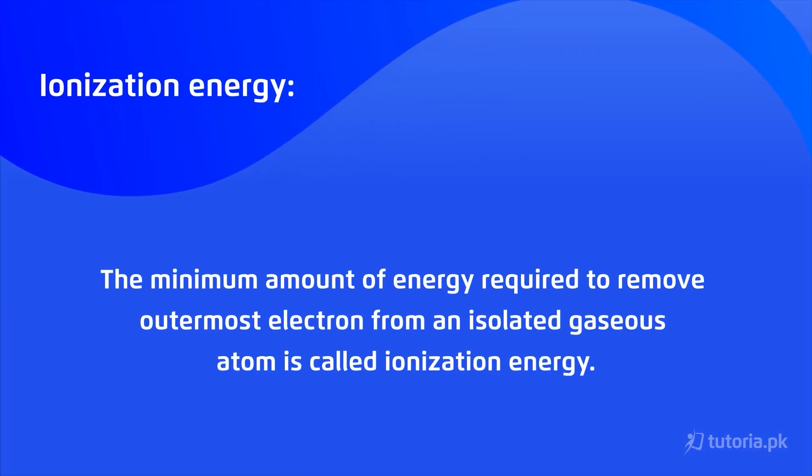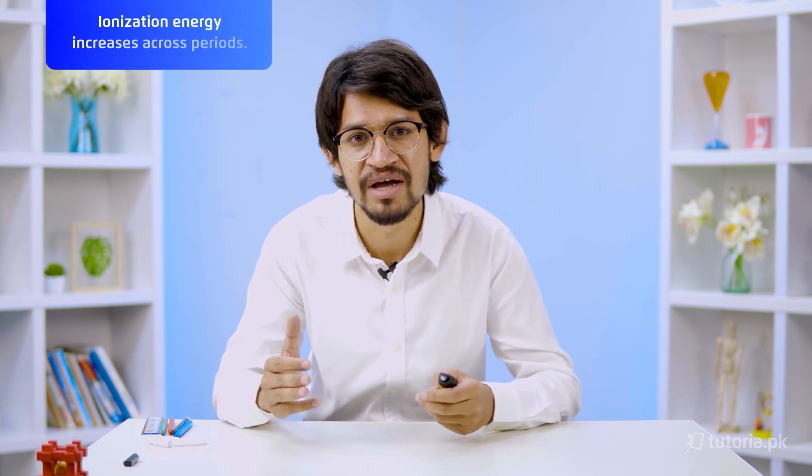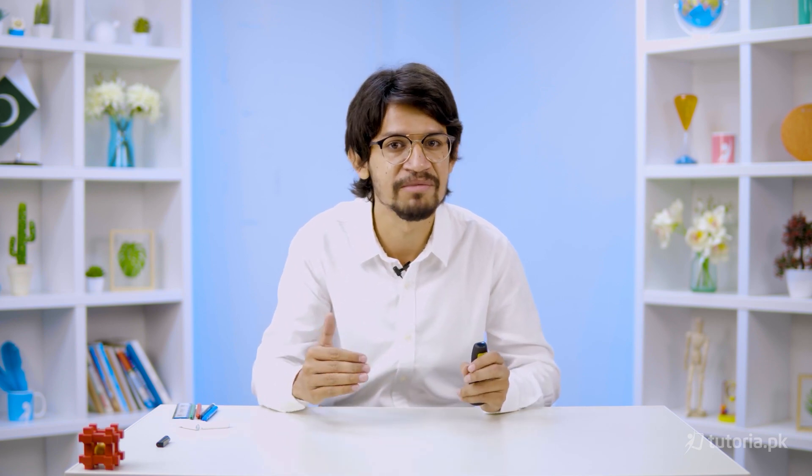Ionization energy is the minimum energy required to remove an electron from the outermost shell. So we can say: the minimum amount of energy required to remove an electron from the outermost shell is called ionization energy. The trend of ionization energy in a group decreases from top to bottom because the atomic size increases, making the distance between the nucleus and outermost shell electrons greater, so it becomes easier to remove them.